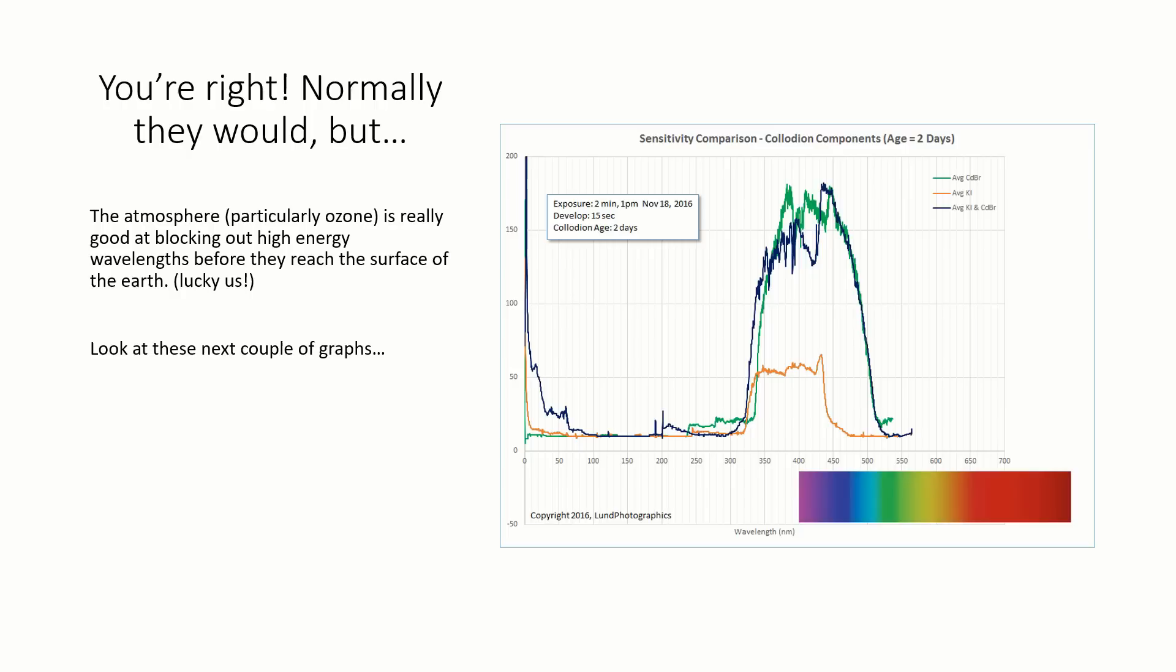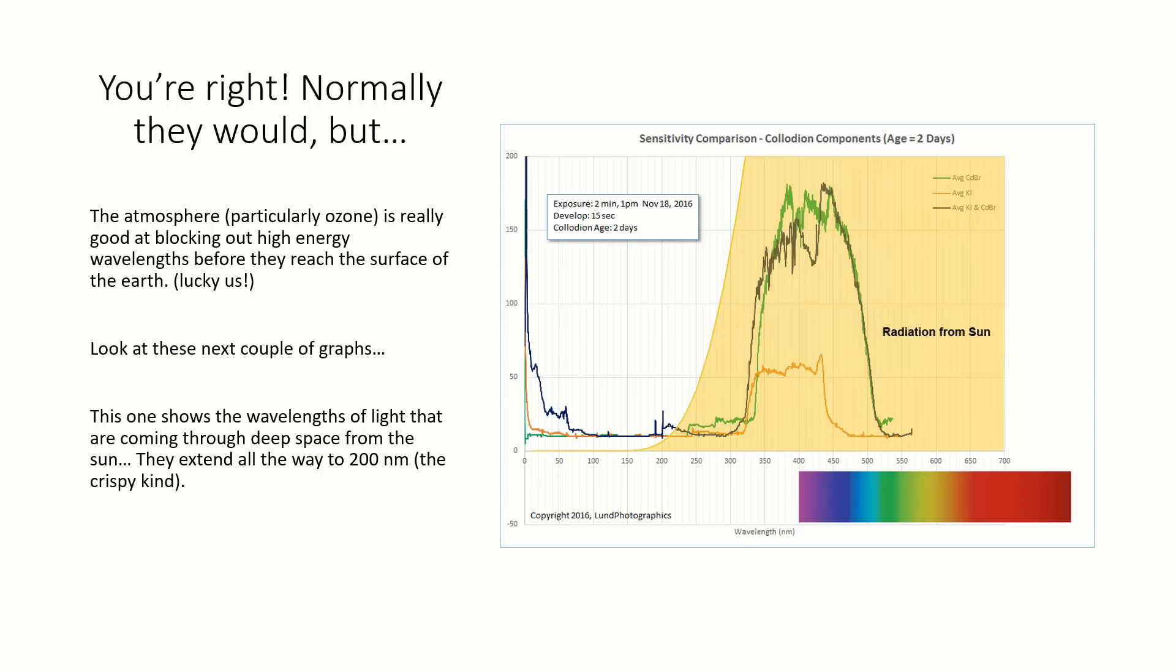Since these spectra were collected using daylight, let's look at what we should expect to see from the sun. Radiation from the sun extends all the way to 200 nanometers, well beyond the sensitivity profile for collodion. So why isn't collodion seeing it?